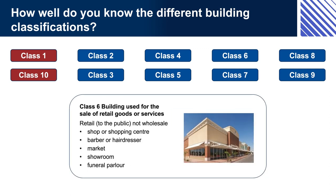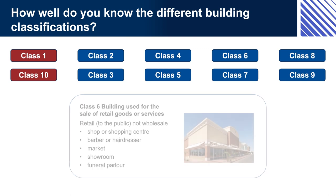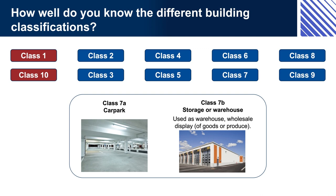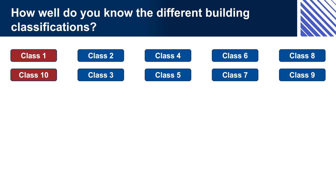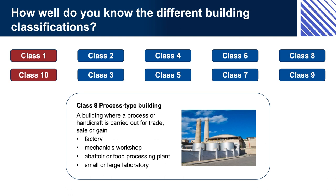Class 6: building used for the sale of retail goods or services — retail to the public, not wholesale. Shop or shopping centre, barber or hairdresser, market, showroom, funeral parlour. Class 7A: car park. Class 7B: storage or warehouse — used as a warehouse or for warehouse display of goods or produce. Class 8: process-type building — a building where a process or handicraft is carried out for trade, sale, or gain. Factory, mechanics workshop, abattoir or food processing plant, small or large laboratory.